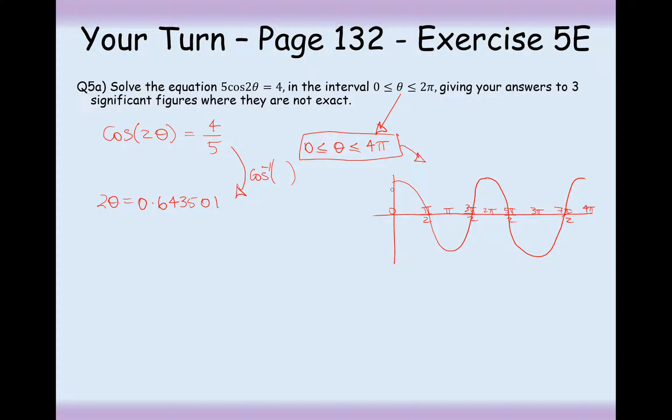So, I put my little marker in at 4/5, and I now look for all of the solutions that I'm going to get across this whole domain. So, I think I'm going to get 1, 2, 3, and 4. So, the first solution here, I've found the first solution, that is 0.6435.